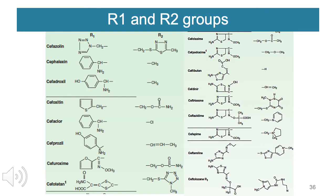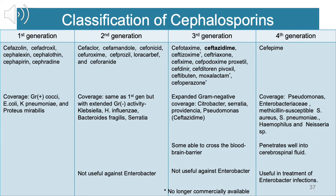Various R groups are present in different cephalosporins. Classifications include 1st, 2nd, 3rd, 4th, and a newer 5th generation. First-generation drugs are cefazolin, cefadroxil, cefalexin, cephalothin, cephapirin, and cephradine. Their coverage includes gram-positive cocci, E. coli, Klebsiella pneumoniae, and Proteus mirabilis.